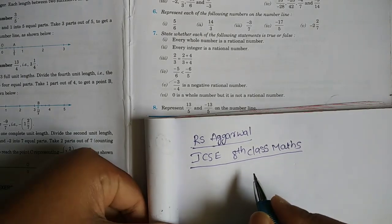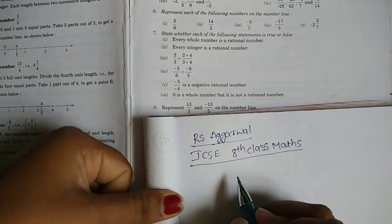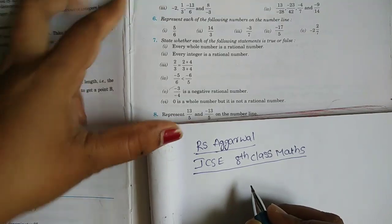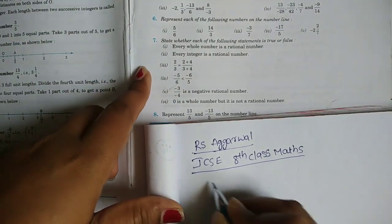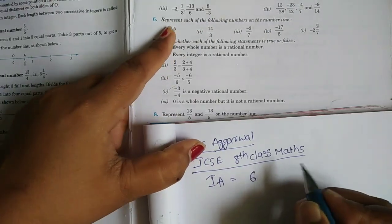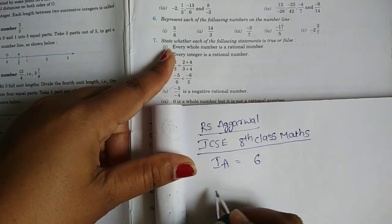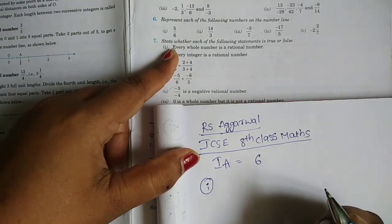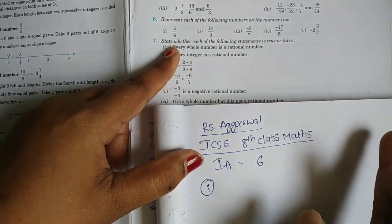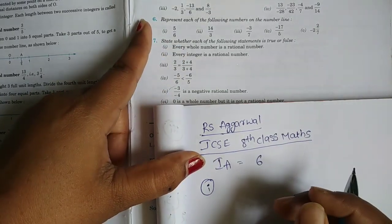Hi everyone. Welcome to our channel. In this video, we will discuss the eighth class Maths, first chapter of Rational Numbers. We will discuss the sixth problem — representing rational numbers on the number line. We will briefly revisit the previous class and then discuss the first problem.